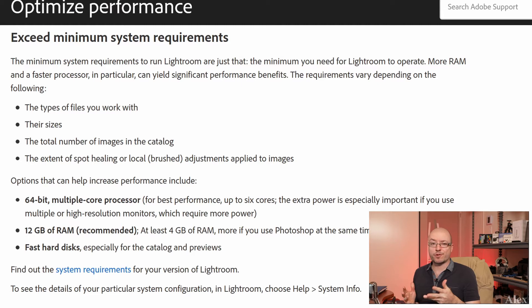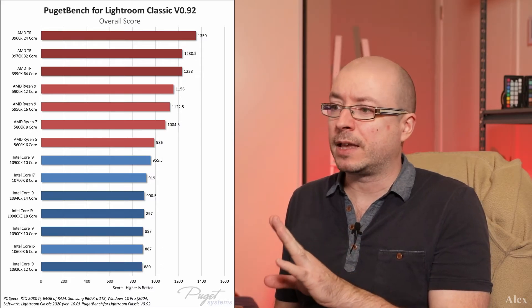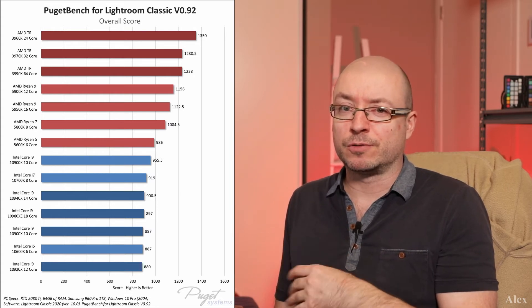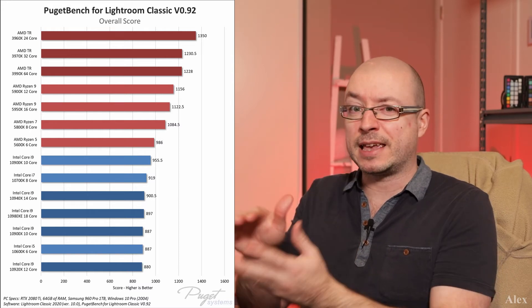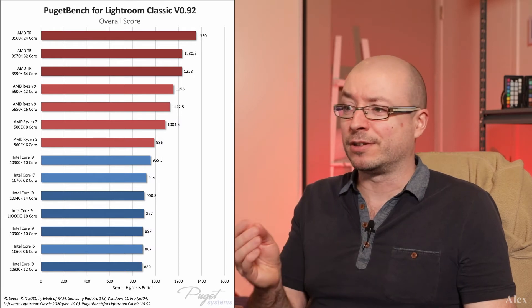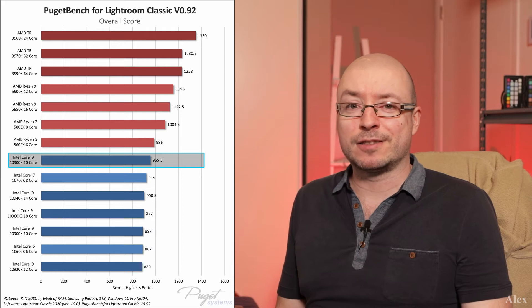What else does the Adobe Lightroom page tell us? They recommend a 64-bit multi-core processor — six cores or more for best performance — but Lightroom can actually use a little bit more than six cores, especially when exporting files. I looked at Puget Systems, who build workstations and did extensive testing. In red are AMD's newer processors and in blue are Intel's newer ones. The lowest AMD chip, the 5600X six-core, is beating the best Intel cores, which is not great for Intel.